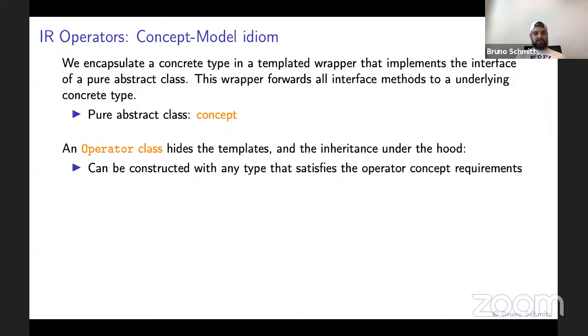I will try to explain type erasure in this one slide that might get a little bit complicated. So how does this idiom work? Basically, we encapsulate a concrete type, the type that you have defined, in a templated wrapper that implements the interface of a pure abstract class. These wrappers forward all the interface methods to the underlying concrete type. The pure abstract class is the concept. It captures the semantic and syntactic requirements on types. A model is any type that satisfies these concept requirements.